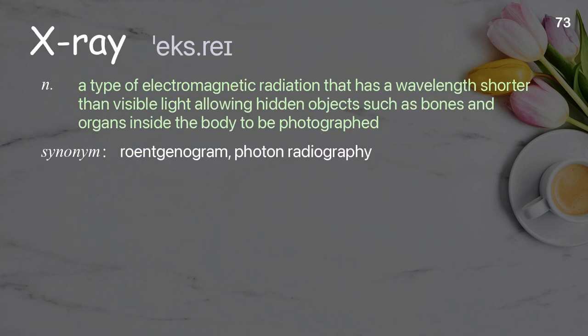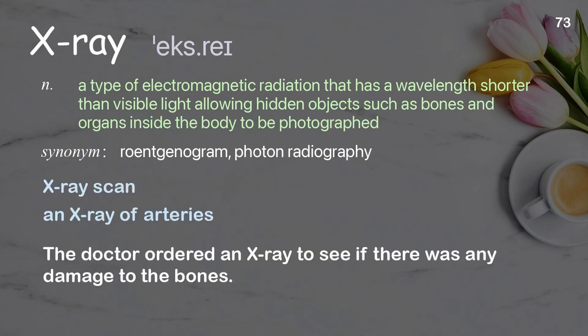X-ray: a type of electromagnetic radiation that has a wavelength shorter than visible light, allowing hidden objects such as bones and organs inside the body to be photographed. The doctor ordered an x-ray to see if there was any damage to the bones.